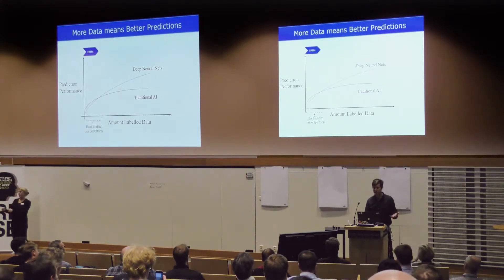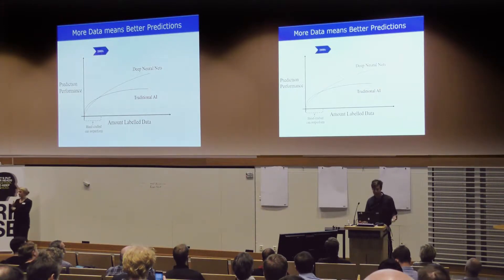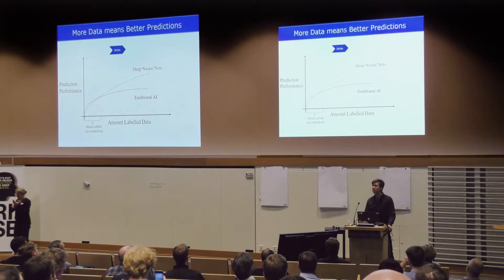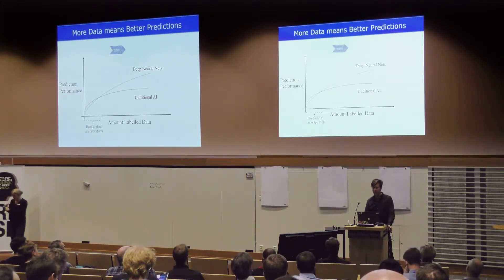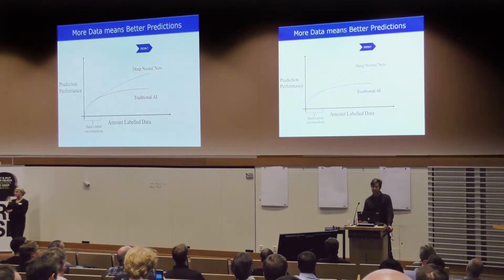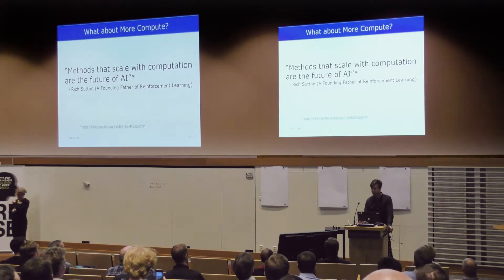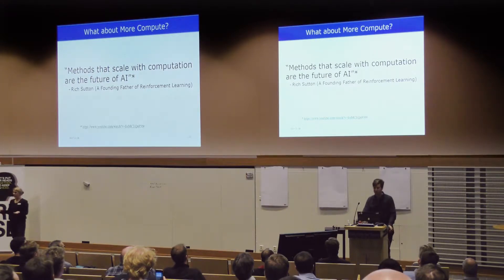Chronologically, starting in the 90s we didn't have as much good quality labeled data available. As we move along in time, ImageNet came out as a large labeled dataset, and that enabled us to make real strides forward. Right now the rocket ship is taking off — we're getting more labeled data and building much better prediction models.